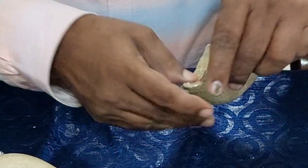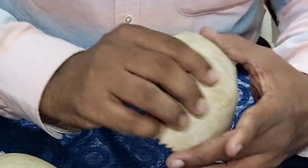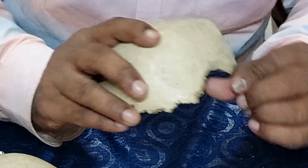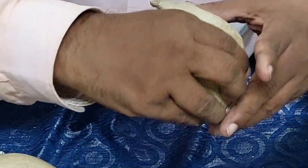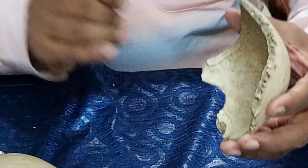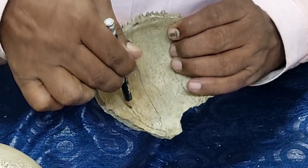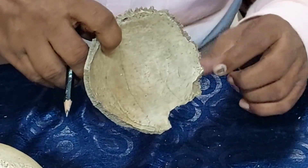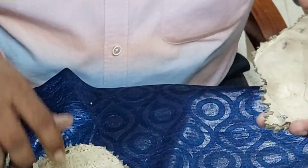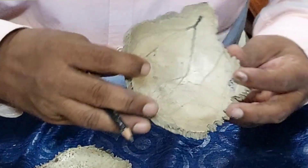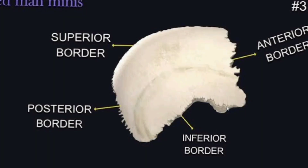To differentiate the inferior border from the superior border: the superior border is serrated and thick, but the inferior border is beveled and smaller, and it articulates with three bones. Close to the antero-inferior angle there is a groove for the middle meningeal vessels. At the postero-inferior angle there is a sulcus for the sigmoid sinus.